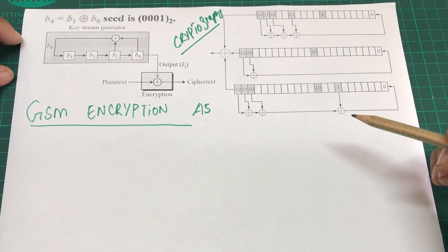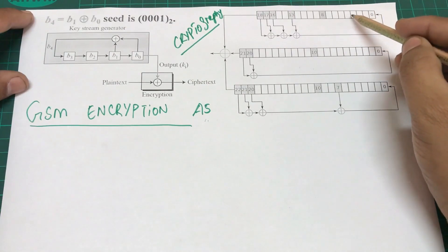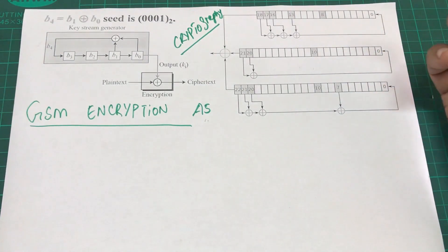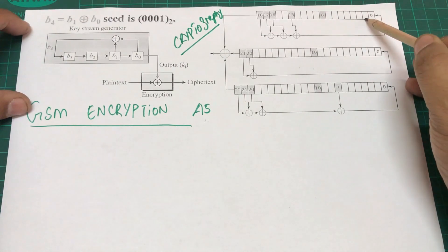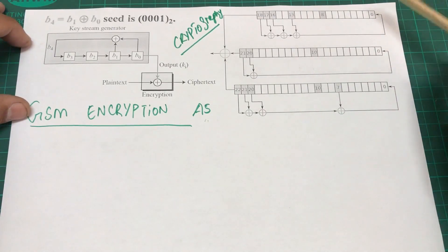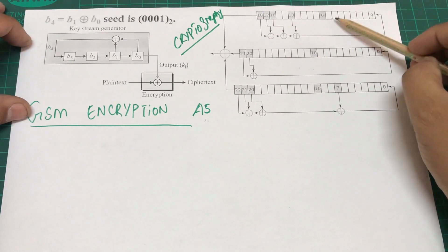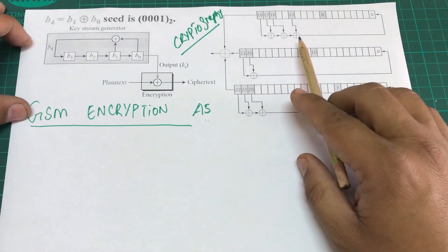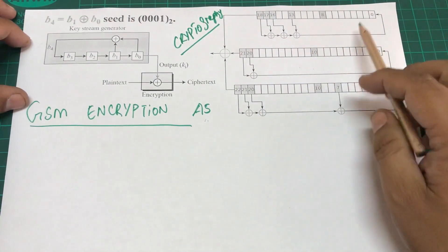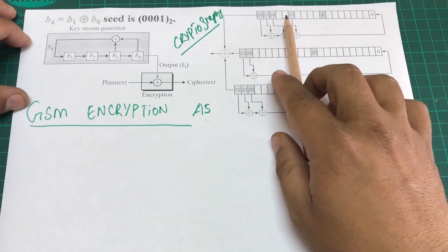This is based on Linear Feedback Shift Registers. Each block you see represents a flip-flop. What a flip-flop does is: whenever a value comes in, it shifts that value. So imagine each box as a flip-flop — when a signal comes in, whatever is at the end shifts to its output, a new bit comes in, and everything gets shifted along. Out of the bits being shifted, a couple are XOR'd together.